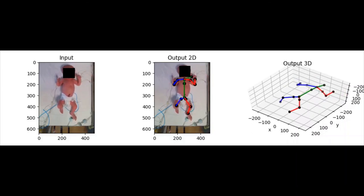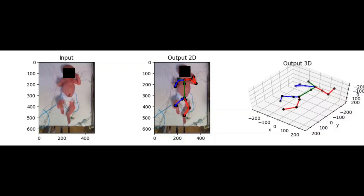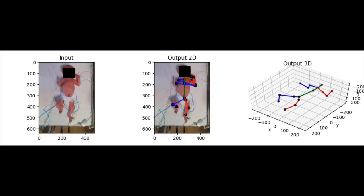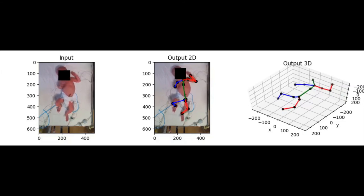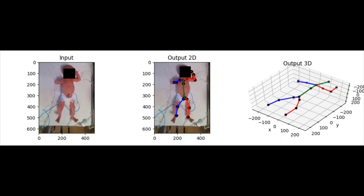The model generalizes surprisingly well to this challenging dataset. The average joint position error for the 2D key points for which the ground truths exist was found to be 13.82 pixels. However, scenarios where the camera angle varies or the infant is occluded by a doctor's hand or medical equipment are not seen in the synthetic dataset, and so the model fails to generalize for these inputs.